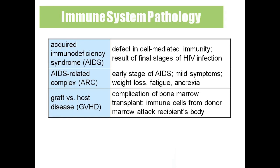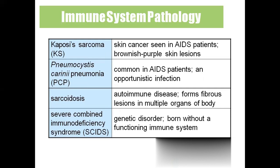AIDS-related complex is the early stage of AIDS; symptoms include weight loss, fatigue, and anorexia (loss of appetite). Graft versus host disease: when a person has a recent kidney or bone marrow transplant, the body may not accept the transplant, recognizing it as not its own product and rejecting it. Nowadays this complication is reduced by giving anti-antibodies prior to surgery. Kaposi's sarcoma is skin cancer in AIDS patients. Pneumocystis carinii pneumonia is an opportunistic infection particularly affecting AIDS patients. Sarcoidosis is an autoimmune disease forming fibrous lesions in many organs. Severe combined immunodeficiency syndrome (SCIDS) is a genetic disorder where a baby is born without a functioning immune system.